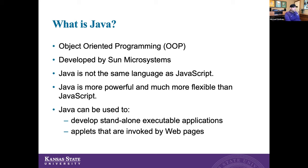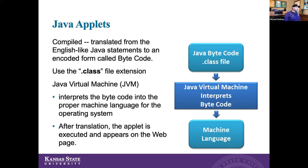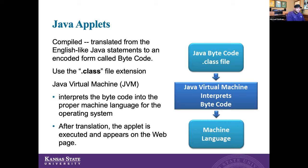Java applets use the .class file extension. The Java virtual machine interprets the byte code into a type of machine language usable for the operating system. So it goes from the .class file, the virtual machine interprets that code, then the applet is executed and appears on the webpage. It follows that flow where it reads the embedded code, interprets it, and executes the .class file.